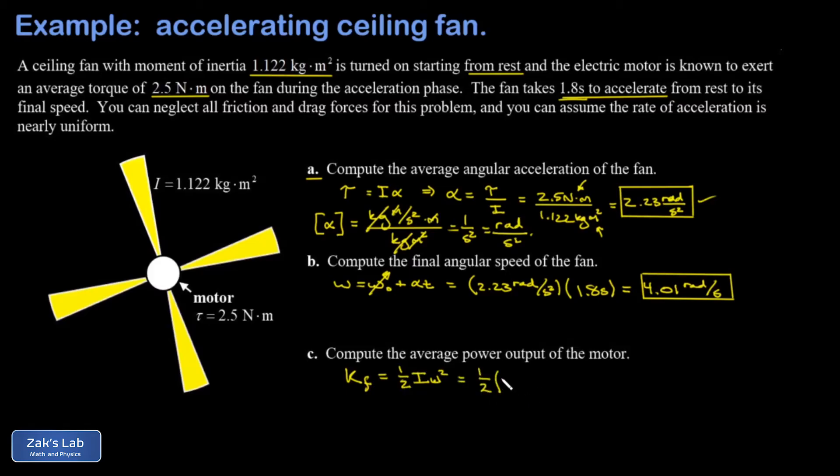My final rotational kinetic energy is one half I omega squared. We were given that moment of inertia I, that's 1.122, and my final angular velocity omega is 4.01 radians per second. I'm going to square that, and to three significant figures this gives me 9.02 joules of rotational energy.